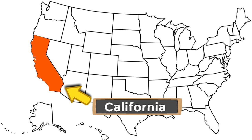California is on the West Coast of the United States. So if anybody says 'I want to go to the West Coast,' there's a big chance they want to go to California. Being on the West Coast, California borders the Pacific Ocean.